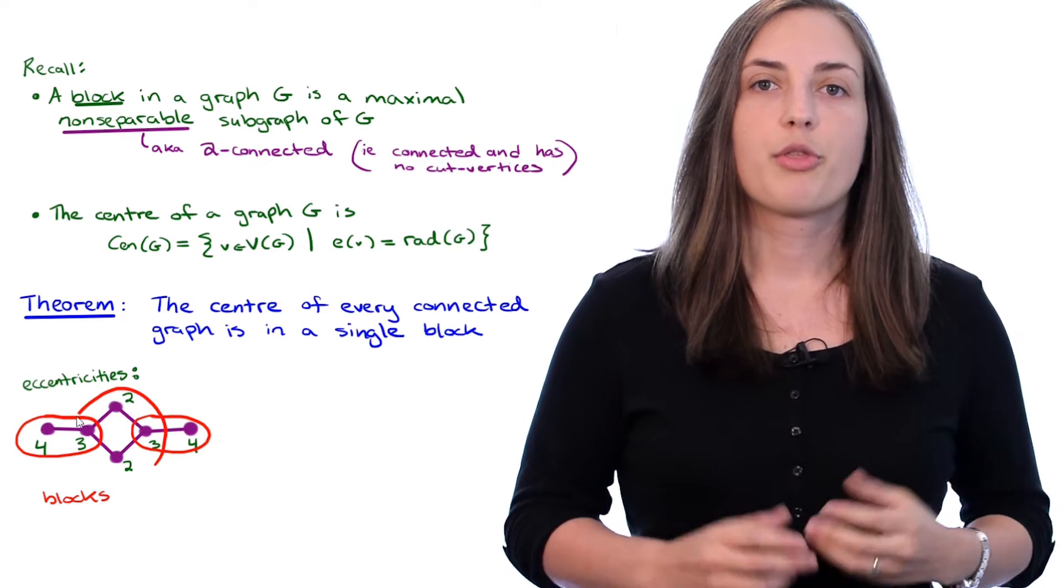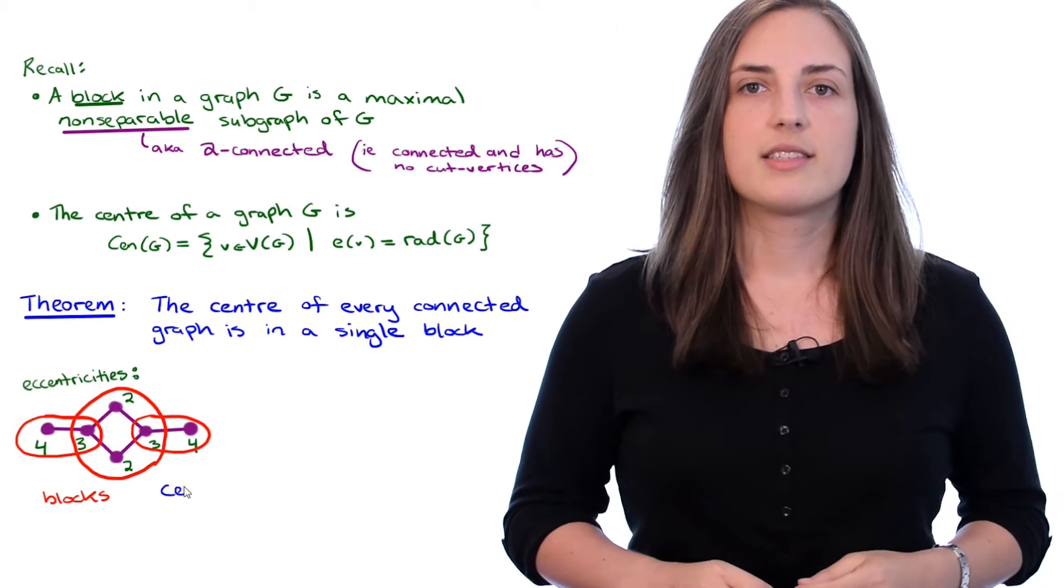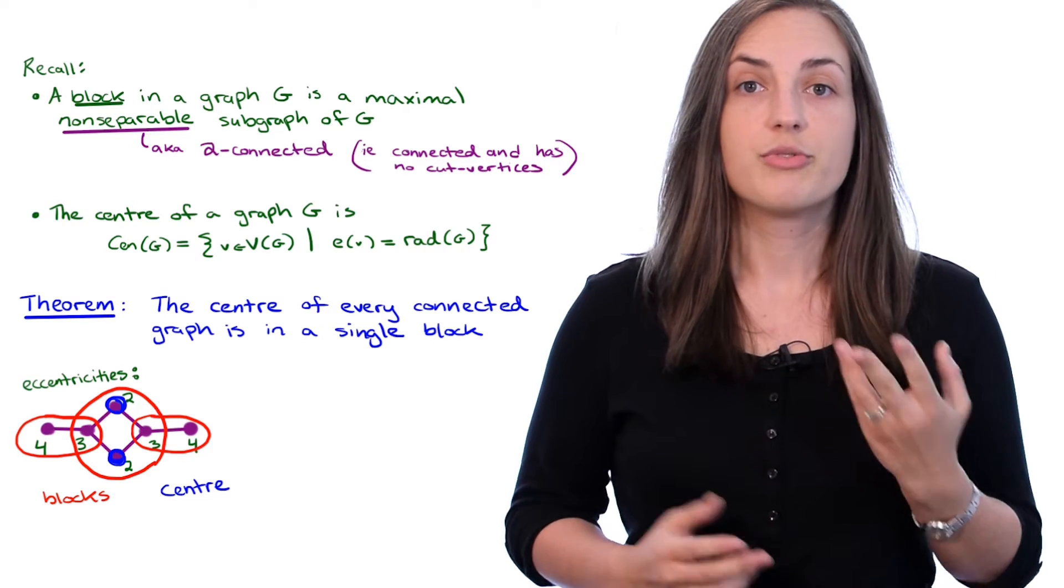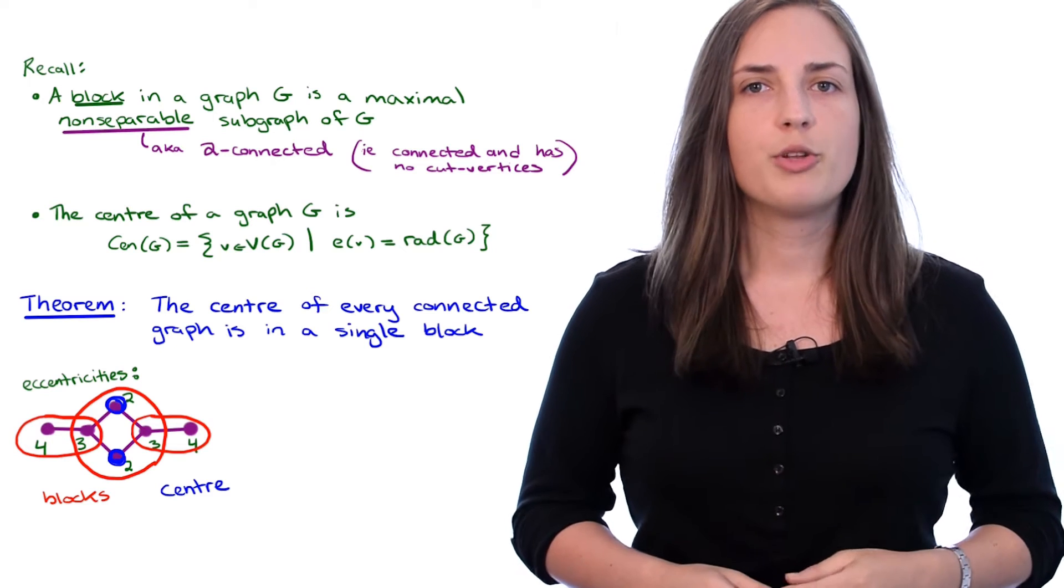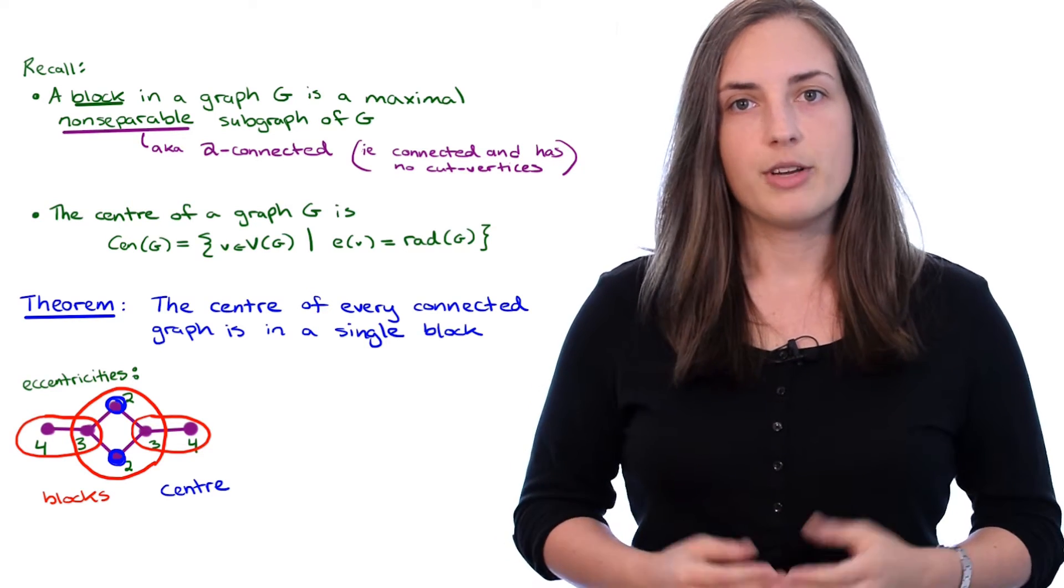So now you can see that those are the three blocks of this graph. Now, notice something. Where is the center? It's those two blue vertices which have eccentricity equal to two. That's the radius, which is the minimum eccentricity. And those two blue vertices do lie within a single block. So for an example, it makes sense.